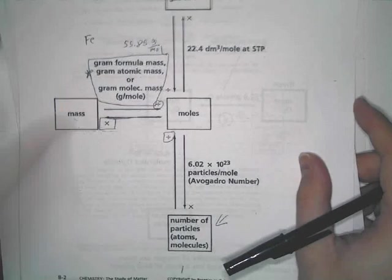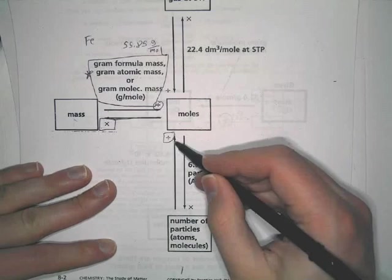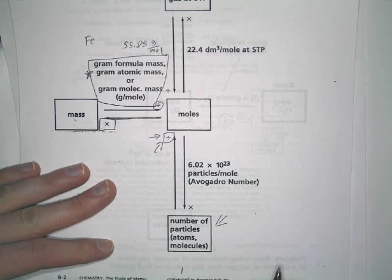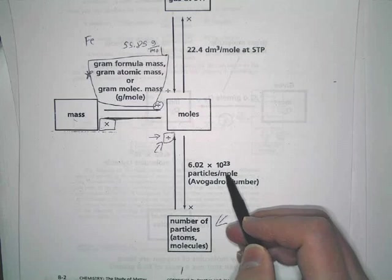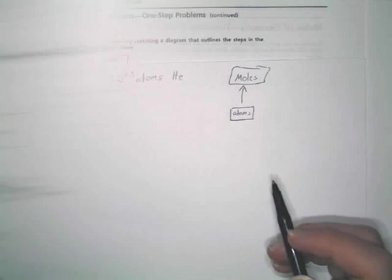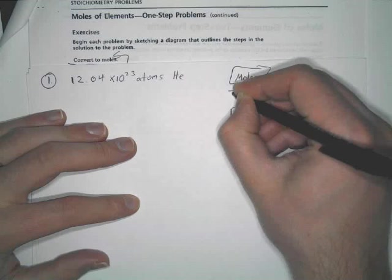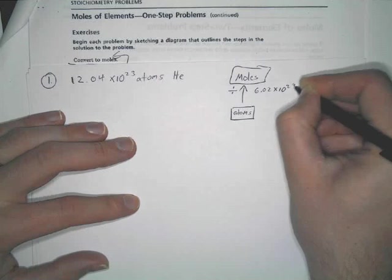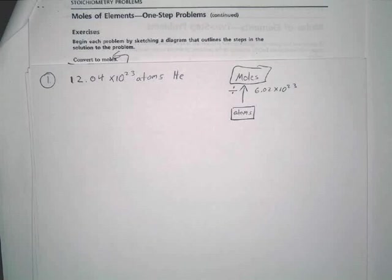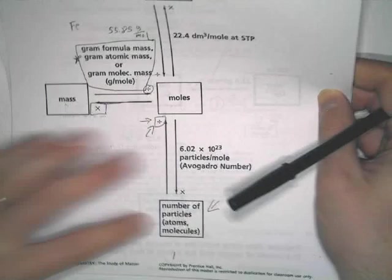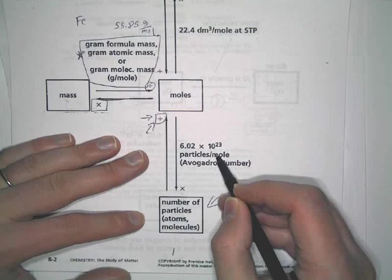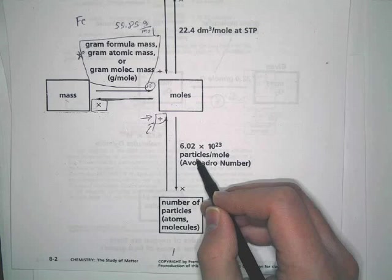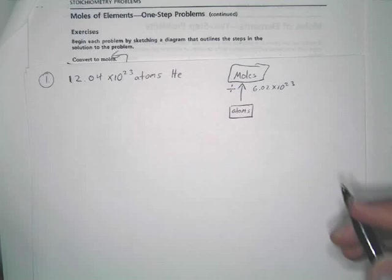Now, in this case, the chart tells you to, as you go up, divide by Avogadro's number. So you're going to divide by 6.02 times 10²³. So write that in. What's his name? Avogadro. And then you'll notice, the unit it gives you here is particles over moles. However, we're not dealing with particles. What is the representative particle here? It's atoms. So you're going to write atoms over moles.